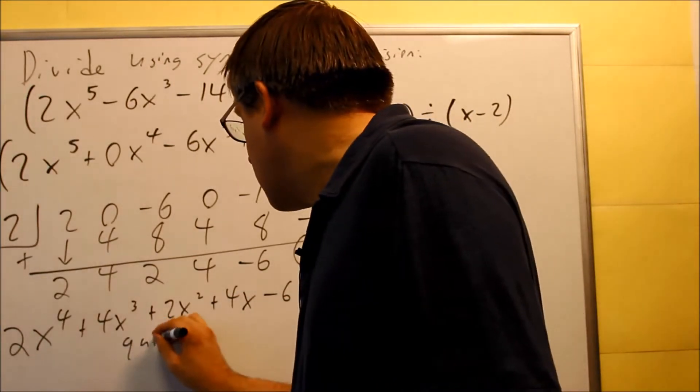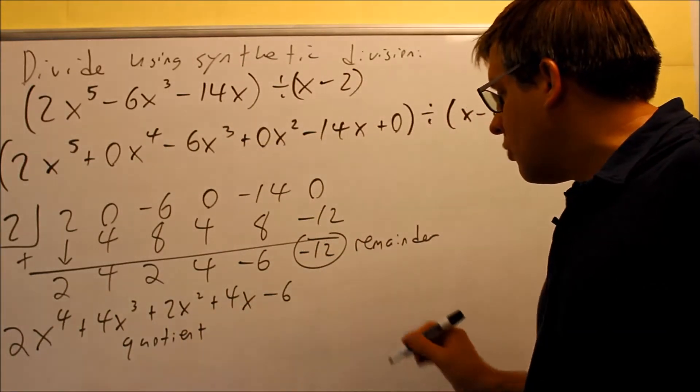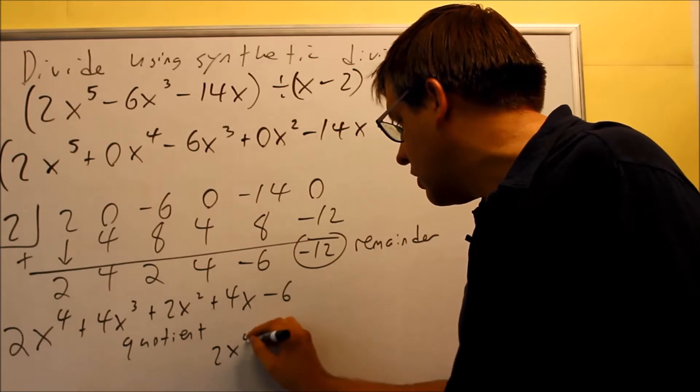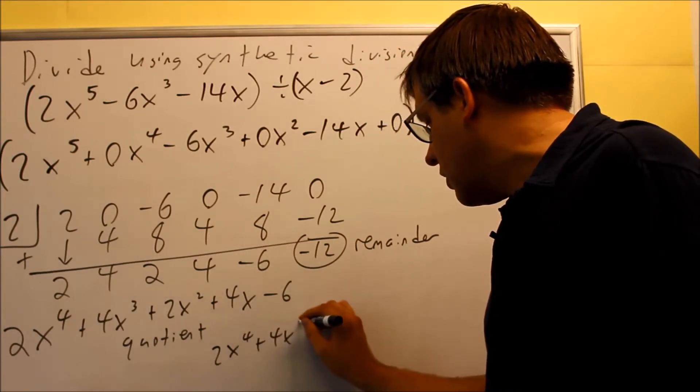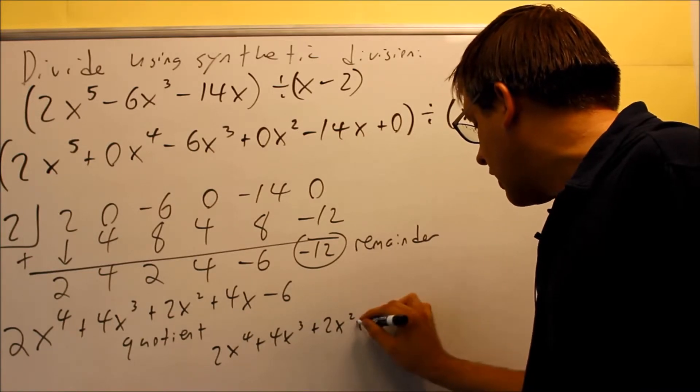Okay, so writing out the whole thing, if they want the whole thing written out as a complete fraction here, you're going to write it all out like this, minus 6.